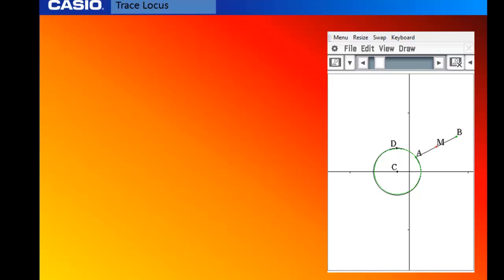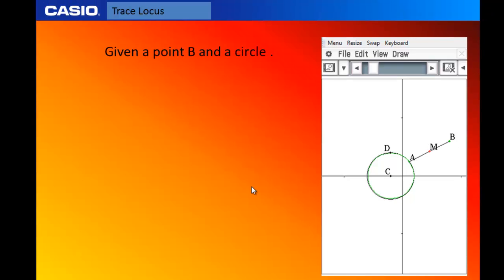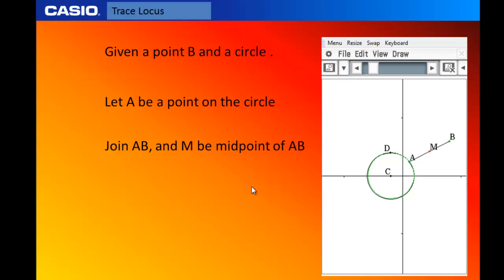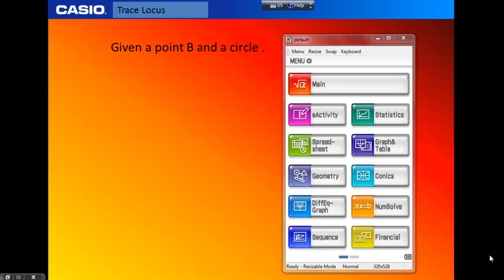The purpose of this recording is to show you how to trace the locus of a point using Casio CasSpec 400. Given a point B and a circle, let A be a point on the circle. Join AB and let M be the midpoint of AB. Animate A along the circle and find the locus of M. This is a demonstration showing how to trace the locus of M using Casio CasSpec 400.